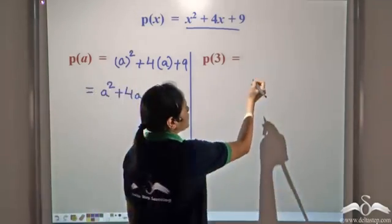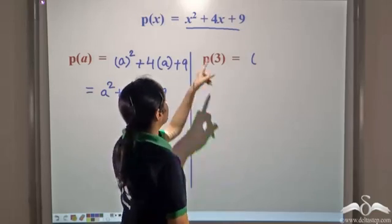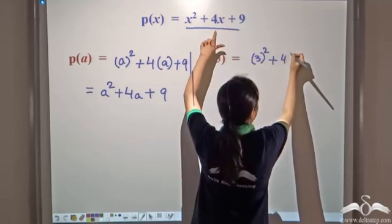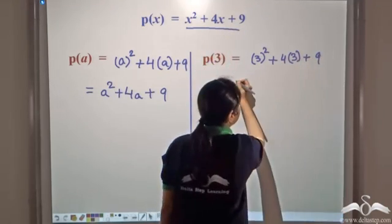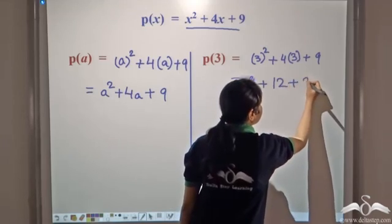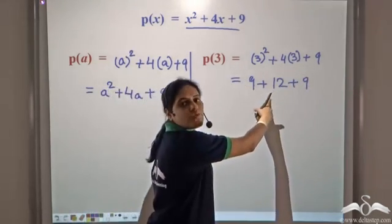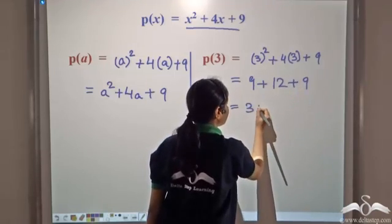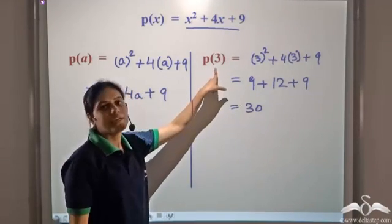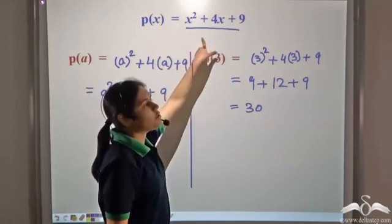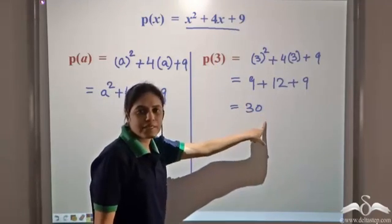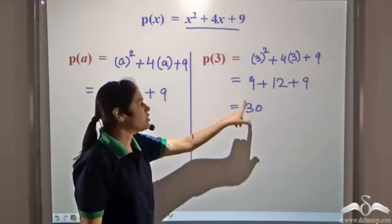What about P(3)? We substitute 3 in place of x. So x² becomes 3², which is 9, plus 4 × 3 which is 12, plus 9. So 9 + 12 is 21, and 21 + 9 is 30. So P(3) is equal to 30 — that is, P(x) evaluated at x equal to 3 gives the value 30.